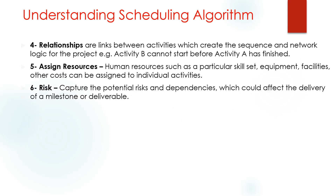Relationships means ties — how to tie activity A after activity B. As explained in previous lectures, you have four types of relationships: finish to start, start to start, start to finish, and finish to finish.